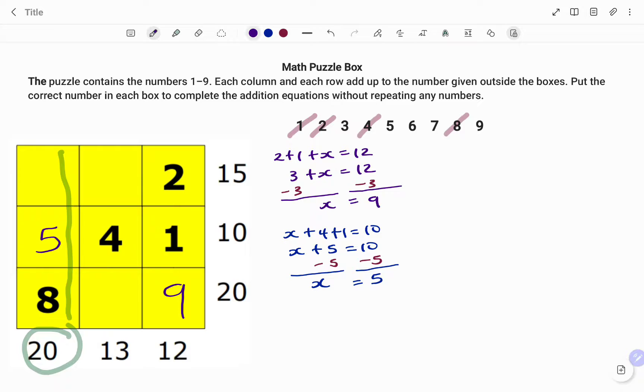So going back to my calculations, I have the missing number x such that x plus 5 plus 8 equals 20. I have x plus 13 equals 20.